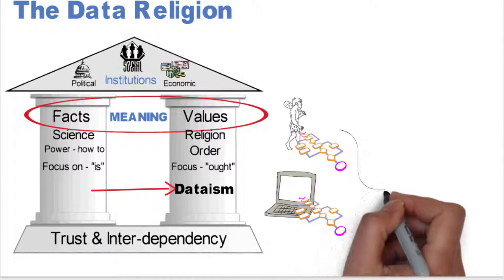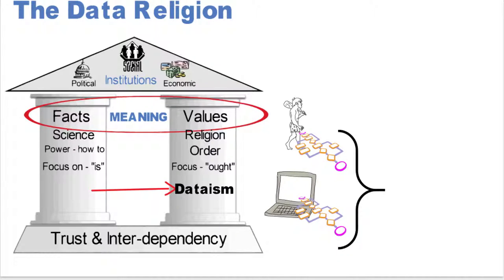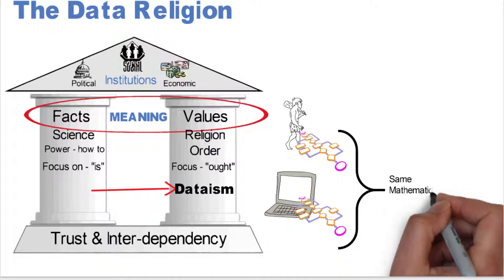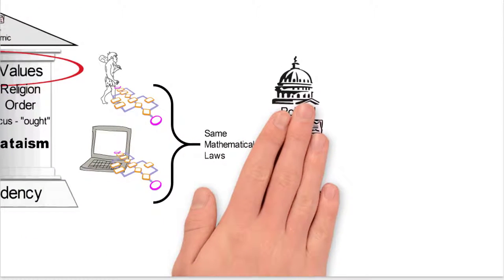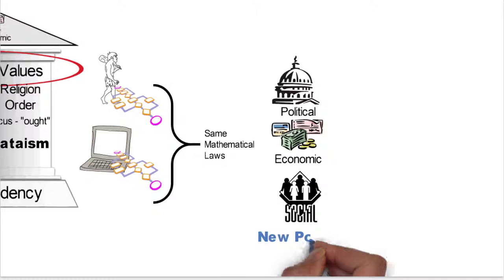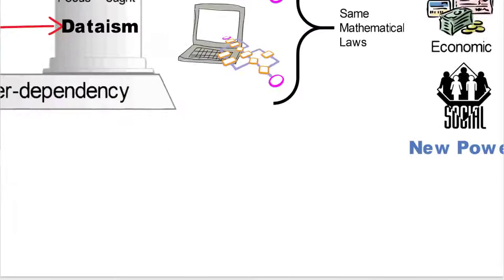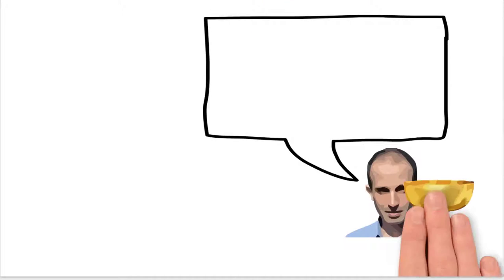Basically, if you look at both sapiens and the technology, the computers are both algorithms, and those algorithms follow the same mathematical laws. So that's going to provide a lot of new powers to all of our institutions.